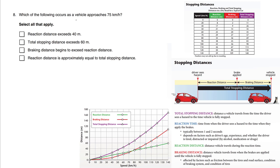Which of the following occurs as a vehicle approaches 75 kilometers an hour? A: the reaction distance exceeds 40 meters. Let's look at this chart down here. The speed here is between 70 and 80, which is 75 kilometers per hour.